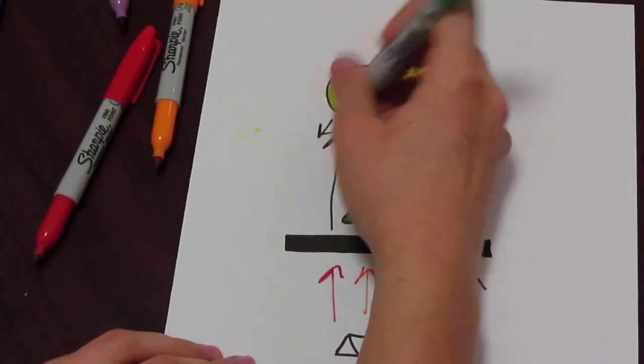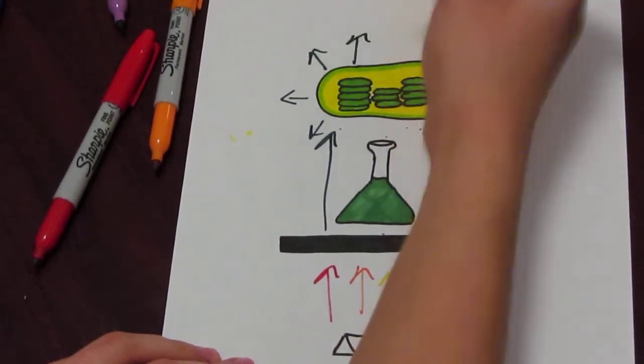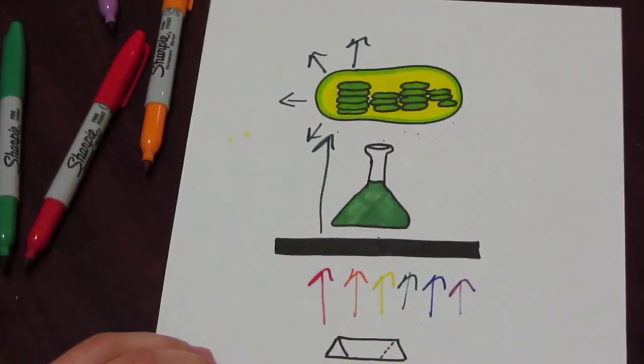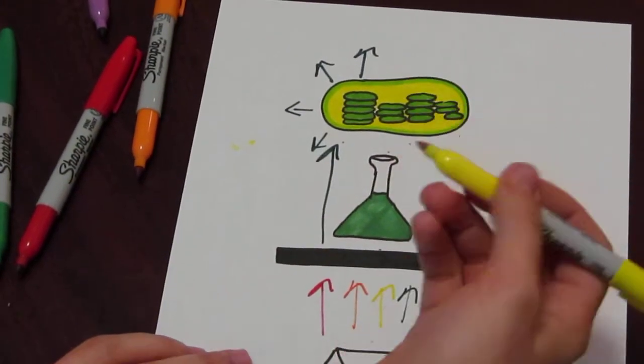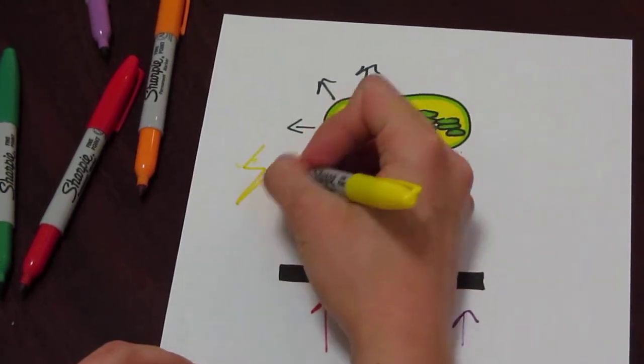The green light is going to reflect off the chloroplast. The chloroplast does not absorb the green light, so that's going to go into a machine that's going to measure this light and that's going to produce electricity.